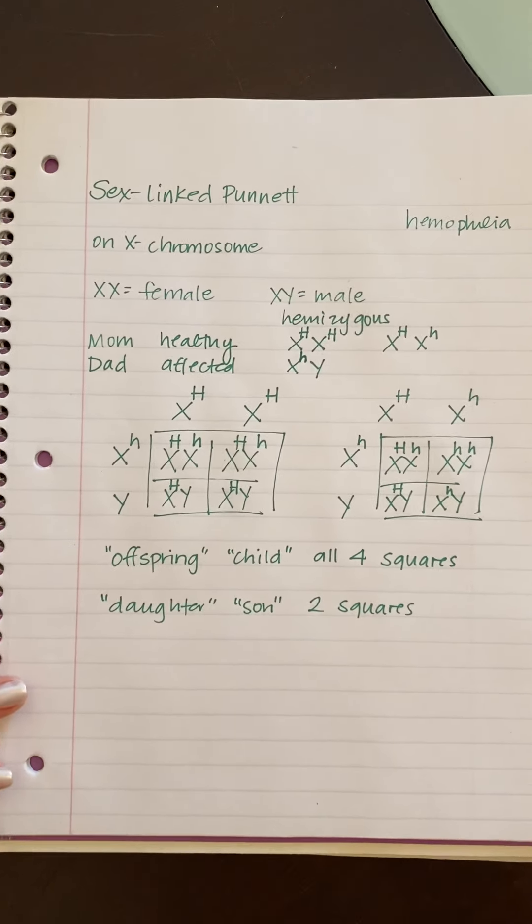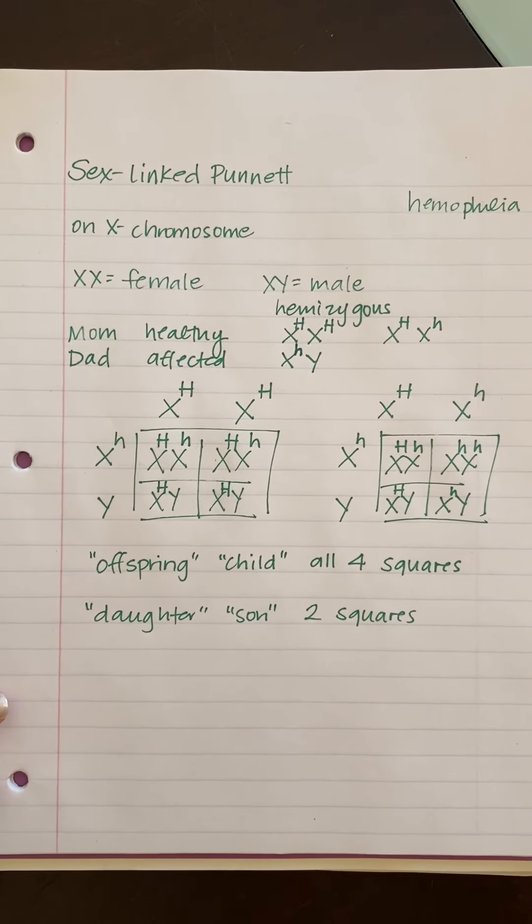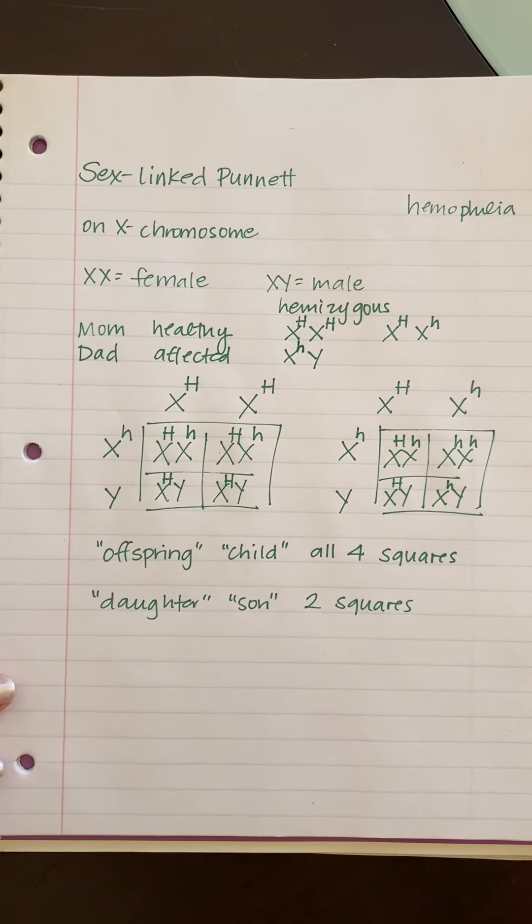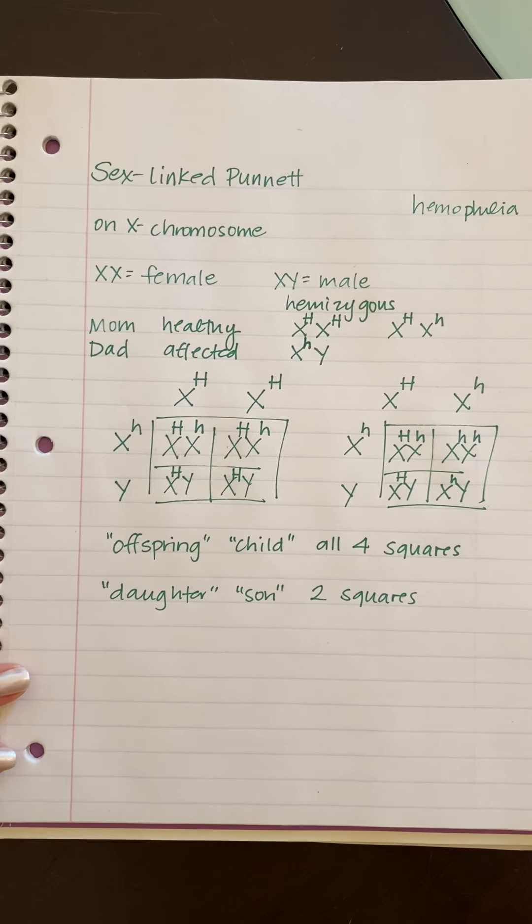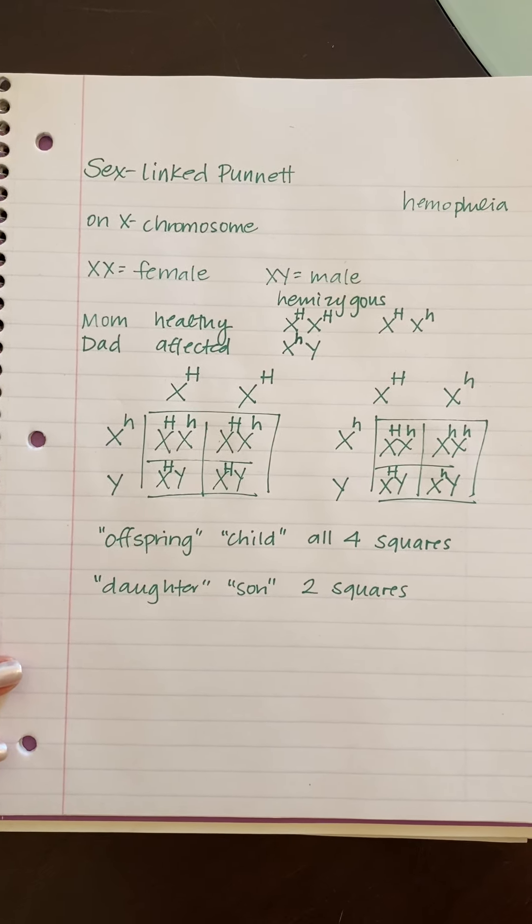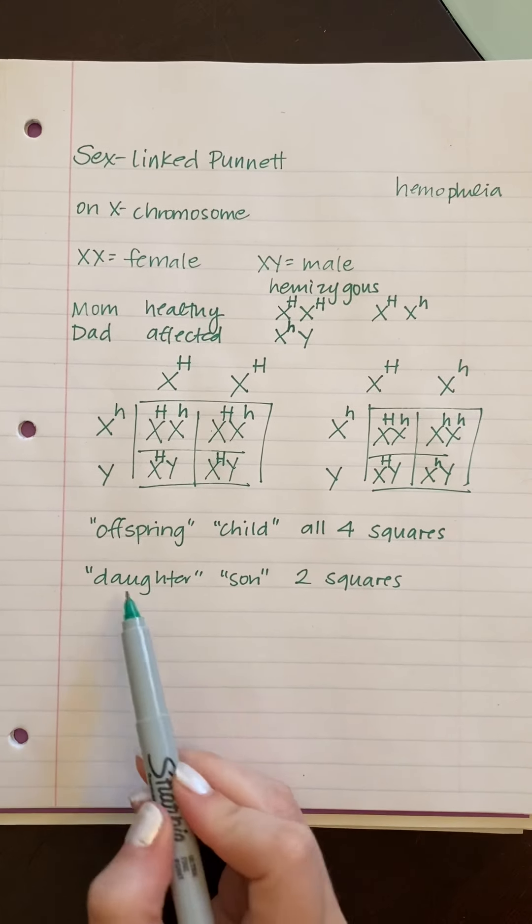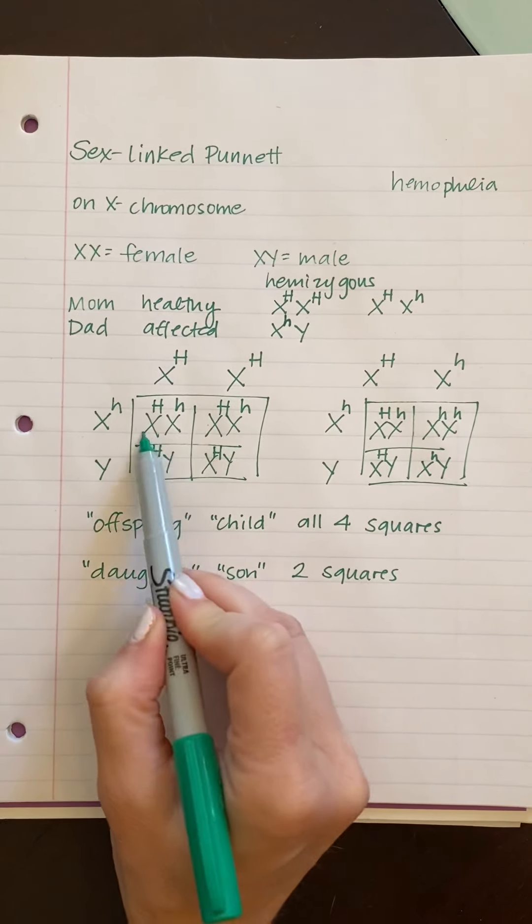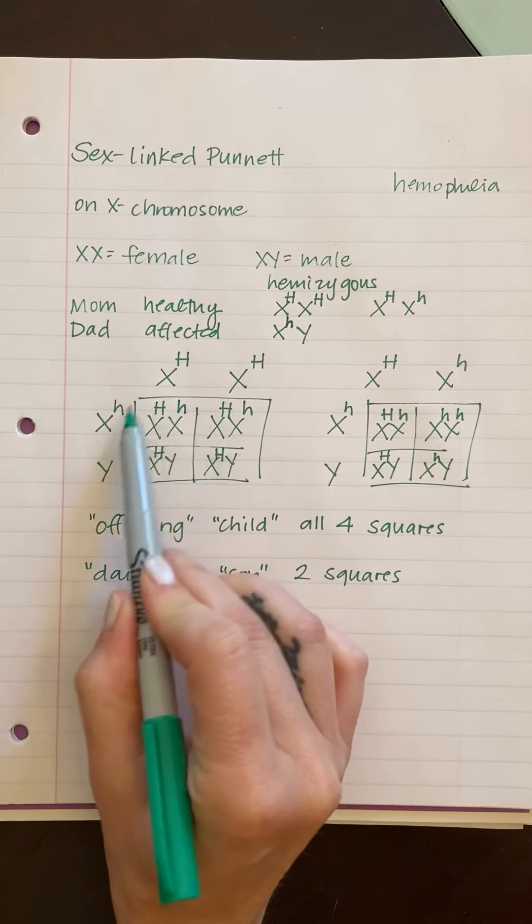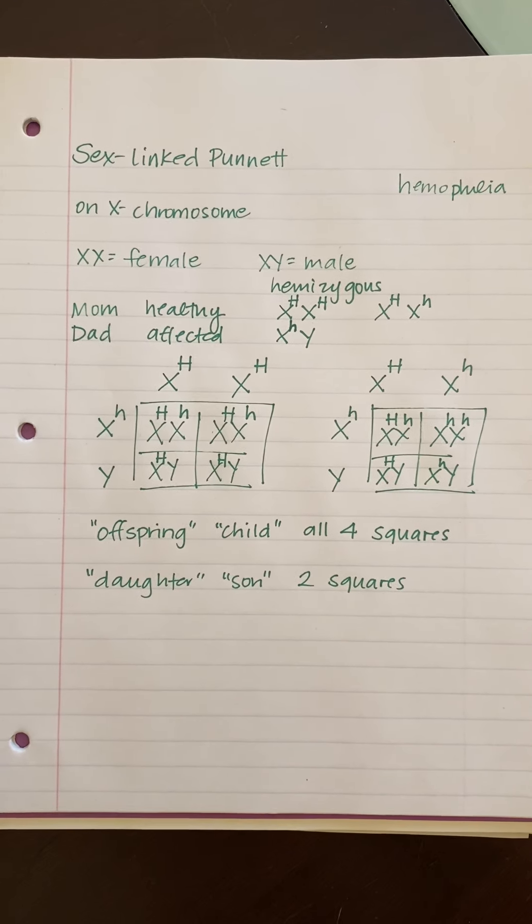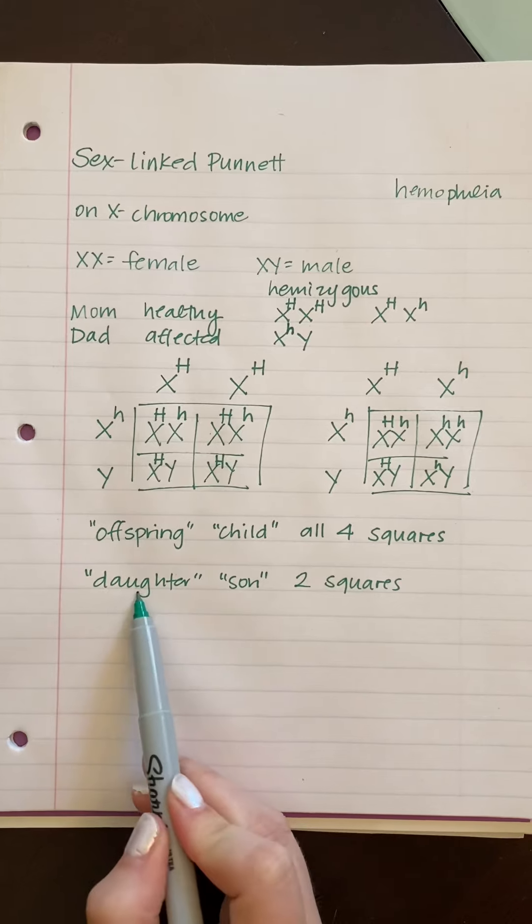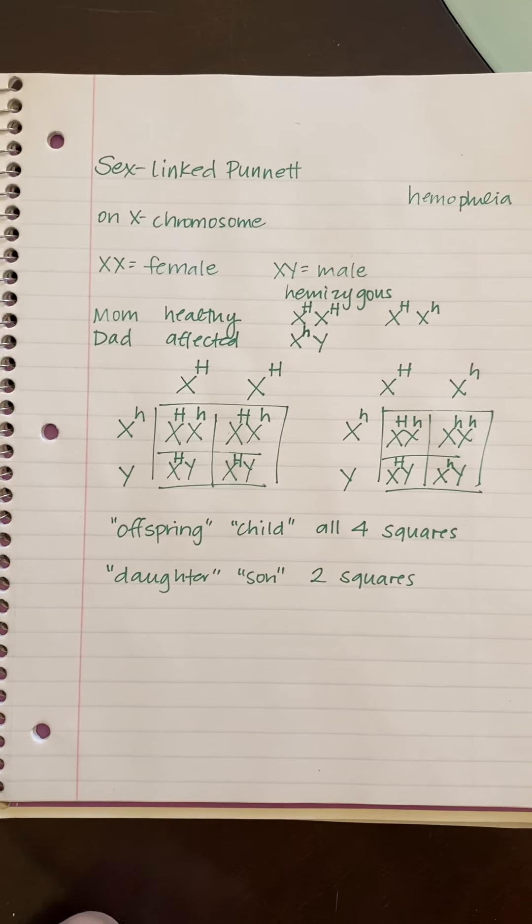Over here, however, let's say I ask, what are the chances they'd have a child who has the disease? It would be zero out of four. But what if I said, what's the chance that they would have a carrier daughter? Again, if I designate the sex, you're just looking at the actual boxes that correlate to the sex of either daughter or son, female or male.